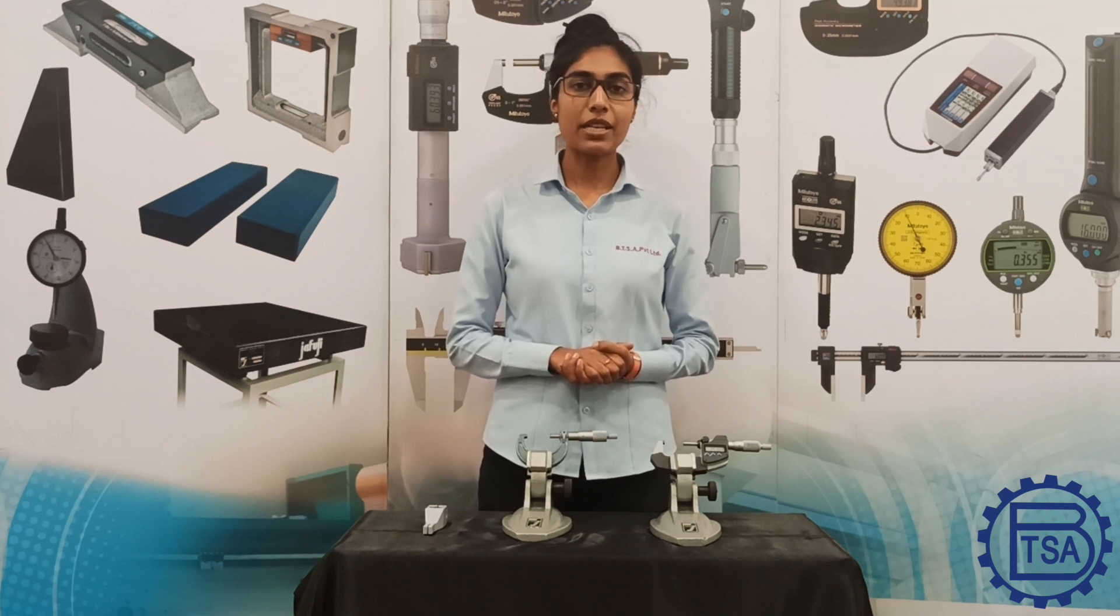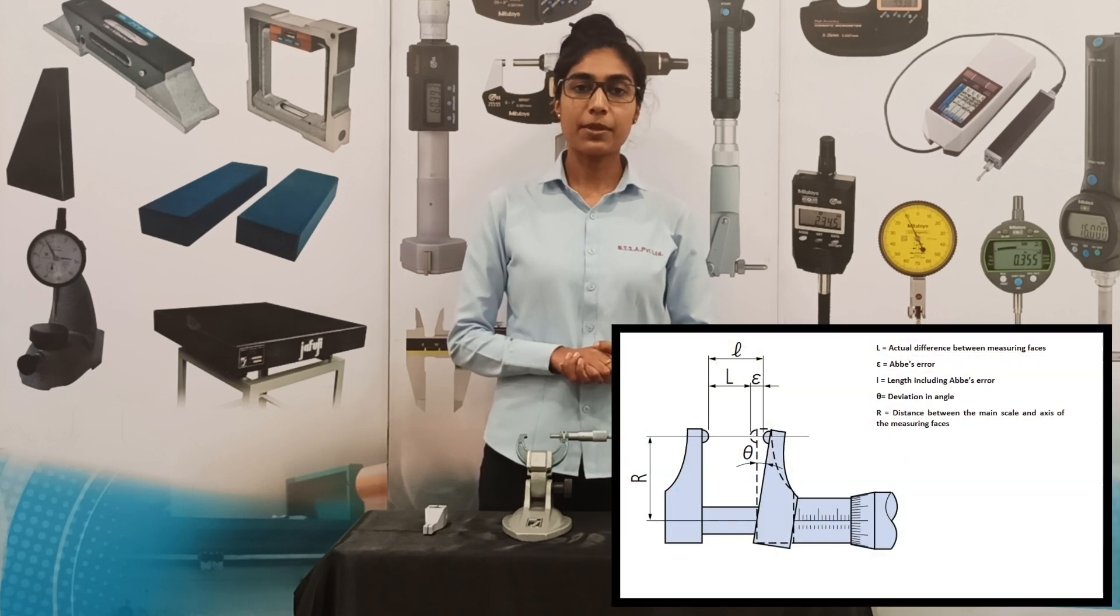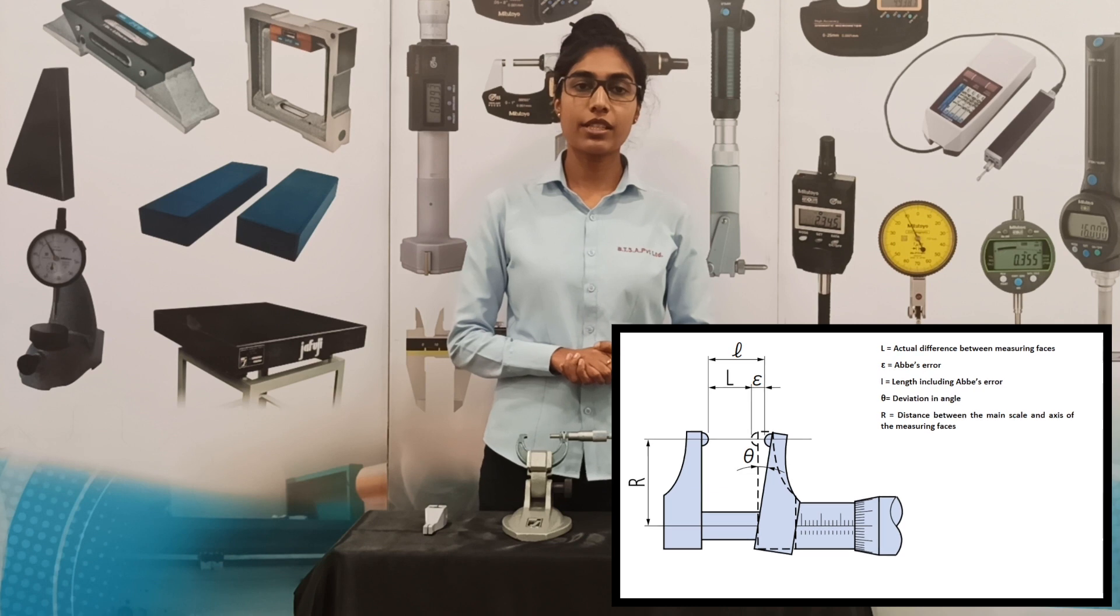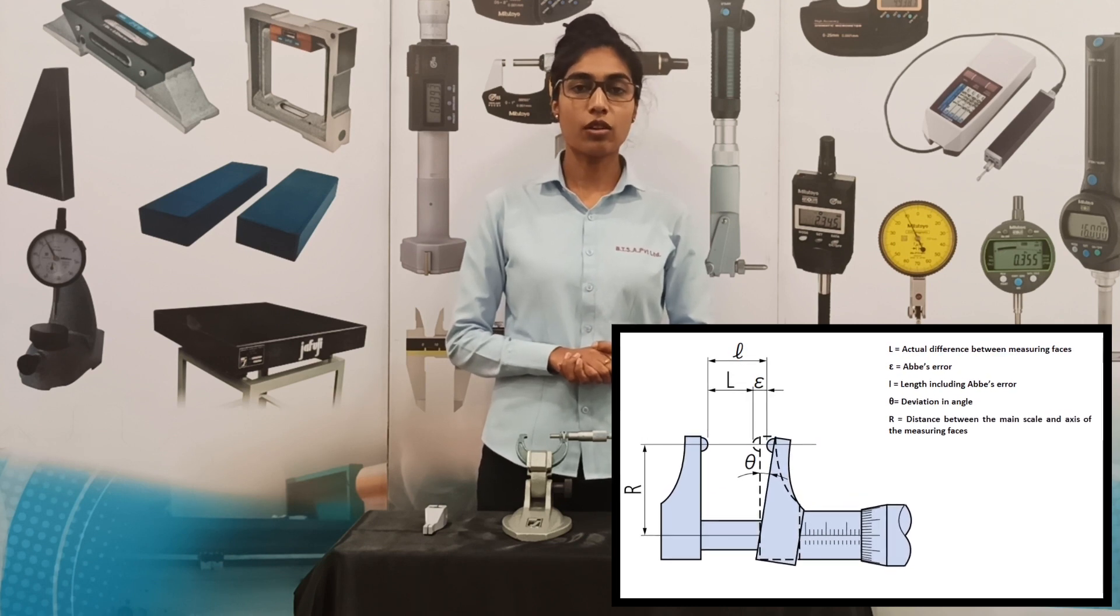Micrometers adhere to a base principle which enables them to perform accurate measurements. The base principle states that maximum accuracy is obtained when the scale and the measuring axis are in common.